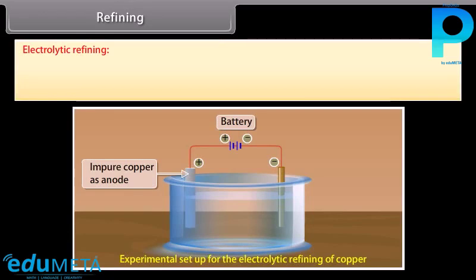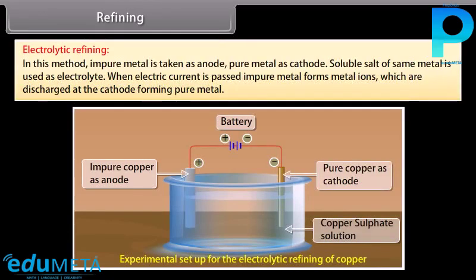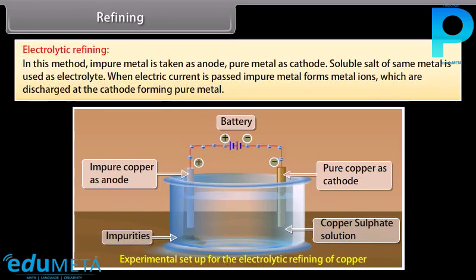Electrolytic refining: In this method, impure metal is taken as anode and pure metal as cathode. A soluble salt of the same metal is used as electrolyte. When electric current is passed, impure metal forms metal ions which are discharged at the cathode, forming pure metal. For example, copper, zinc and aluminium.